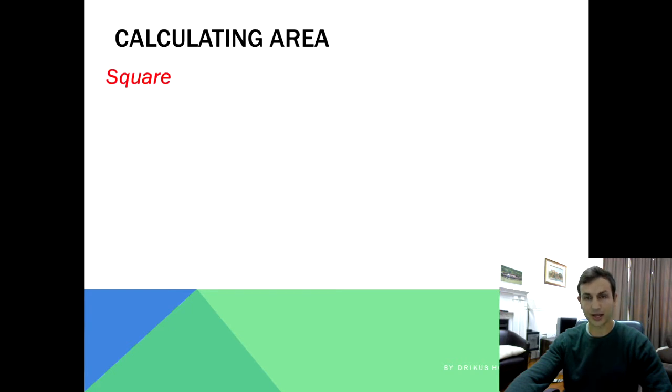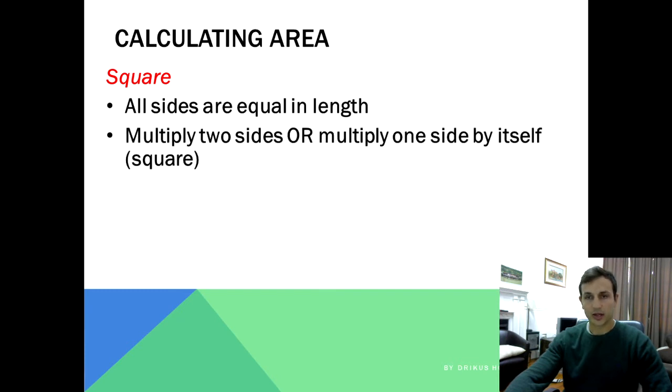So calculating the area of a square. As we know, all sides are equal in length, and for a square you multiply two sides or multiply one side by itself because all the sides are the same length. So you multiply one side by itself, you're basically squaring that side.